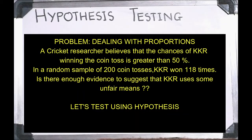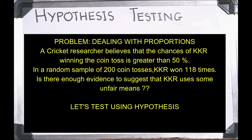Let us go through the question shown on the board. A cricket researcher believes the chance of KKR winning the coin toss is greater than 50%. In a random sample of 200 coin tosses, KKR won 118 times. Is there enough evidence to suggest that KKR uses some unfair means? The researcher is claiming that KKR has a chance of more than 50% of winning the toss, and the sample proportion can be found from those 118 wins out of 200.